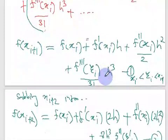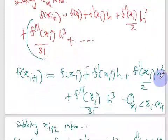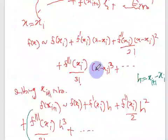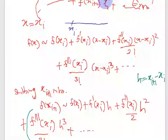We want to get an expression for an approximation of the double derivative. To do that, we use another point, xi plus 2. The points are located at xi, then xi plus 1 at distance h, and xi plus 2 at the same distance h further.